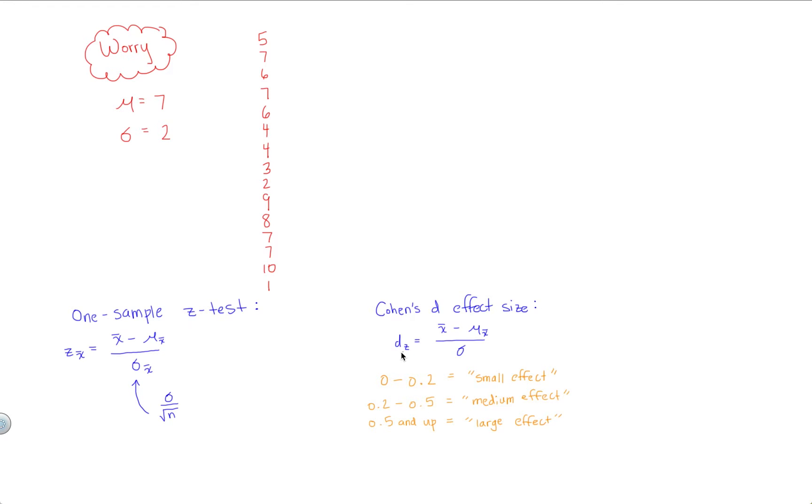So we're going to get a number from this, and here's how you can interpret the number we get from the formula for the effect size. 0 to 0.2 represents a small effect. 0.2 to 0.5 represents a medium effect. And any value larger than 0.5 represents a large effect.